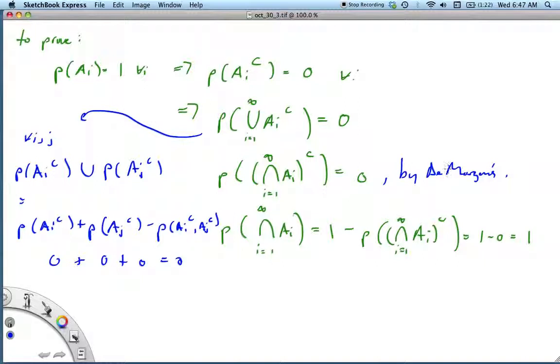Then we establish that the thing we're asking the probability of is actually the complement of this piece. So P(∩Ai from i=1 to ∞) = 1 - P(here), by the definition of complement, which is 1 - 0, which is 1, which is what we were to demonstrate.